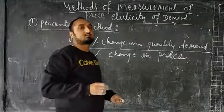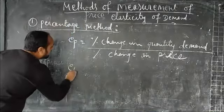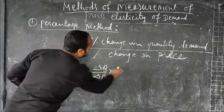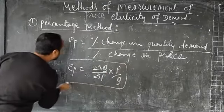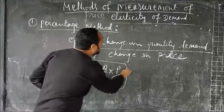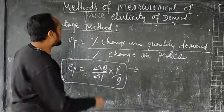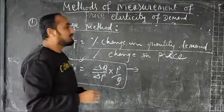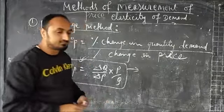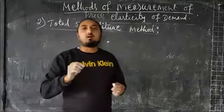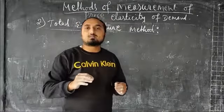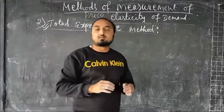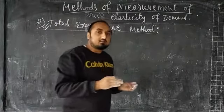This derivation we have already done while covering the definition of price elasticity of demand, and we have got the formula: EP equals (ΔQ/ΔP) × (P/Q). Since this portion has already been completed, I am not going to explain it again. I will move to the next method, that is the total expenditure method. The total expenditure method is one of the methods suggested by Alfred Marshall to measure the elasticity of demand.